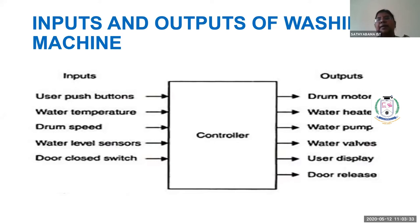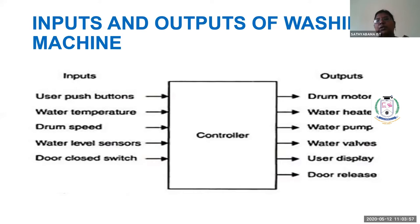The water pump pumps water from the drum to the outlet. The water valve is closed during filling and opened during drain operation. The user display shows the current activity — whether it is washing, spinning, or if the door is released. The door must be closed while filling water and released once washing is completed.